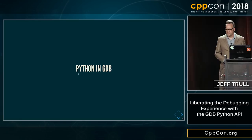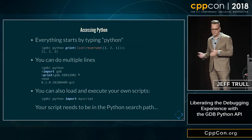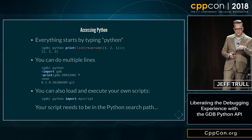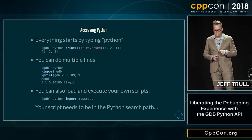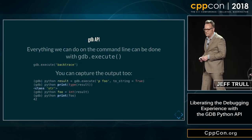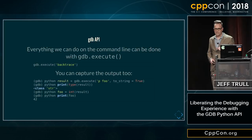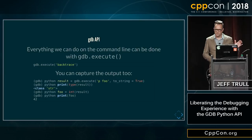Python and GDB: to access Python, you just type 'python', and then you can put a lot of things after. You can do one line of code — here we reverse a list. You can do multiple lines where you type everything in, then 'end', and it runs all of those lines together as a single script. You can also load and import your own scripts if you specify the Python path right. Everything that we can normally do on the command line can also be done with a function called gdb.execute, giving the same string you would have typed on the command line. You can capture the output as well, and then parse it.